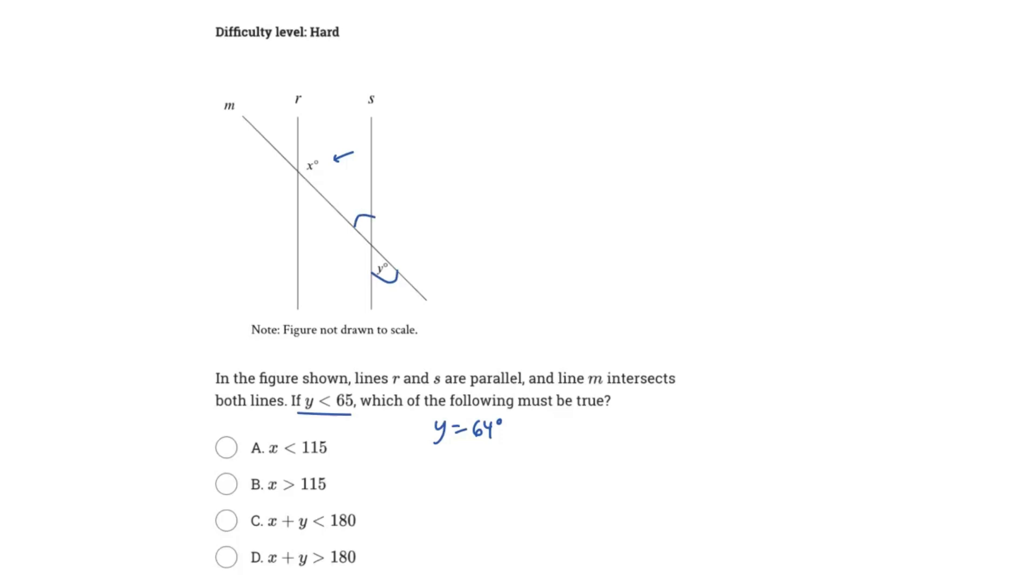And so now we know that this Y right here is 64 degrees. And so the angle opposite of that, that's going to be vertical angle. So this is also going to be 64 degrees. And we can see here that this 64 degree angle and angle X, these are consecutive interior angles. And so what happens is that they are supplementary. So they have to add up to 180 degrees.